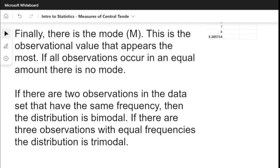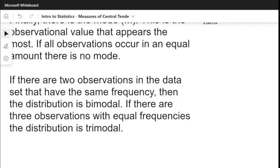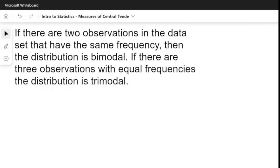Finally, there's the mode M. This is the observational value that appears the most. If all observations occur in an equal amount there is no mode. If there are two observations in the data set that have the same frequency, then the distribution is bimodal. If there are three observations with equal frequencies, the distribution is trimodal.